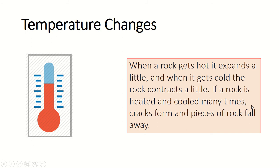We'll start off with our first one: temperature changes. Let's imagine we're in a desert. During the day the desert is very, very hot, and during the night it is very, very cold. When it is very hot, the rock itself heats up and expands. As it cools down, it shrinks and contracts. Think of it like blowing a balloon up and then letting it contract back down. If this rock is heated and cooled many times — expanding and contracting repeatedly — eventually there will be small cracks that start to form and pieces of rock might fall away.